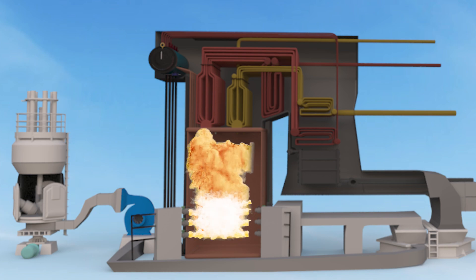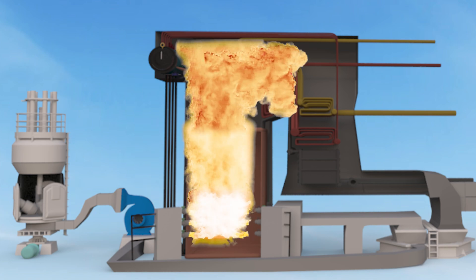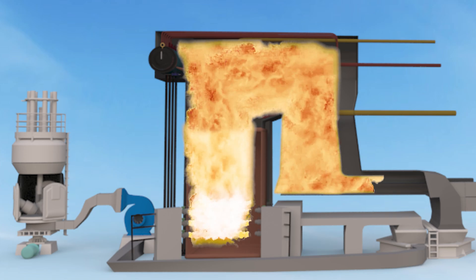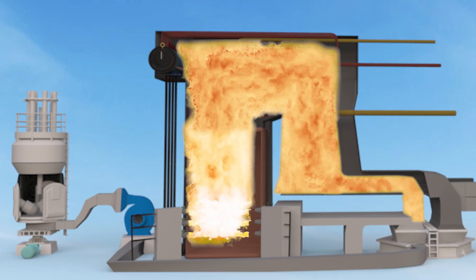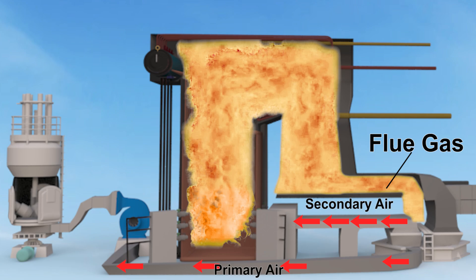The air preheater recovers heat of flue gas and heats up ambient air which passes through it. This heated air gets divided into two streams. One stream, called secondary air, is sent to the furnace by the FD fan — which we have already covered in our previous video. The second stream of preheated air goes to the pulverizer or mill.